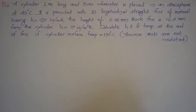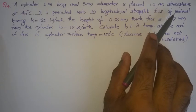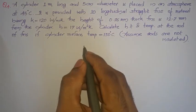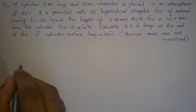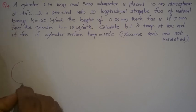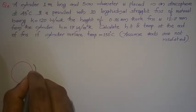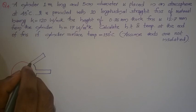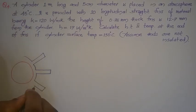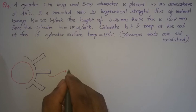The next question is a Case 3 problem: a cylinder 1 meter long and 5 cm diameter is placed in an atmosphere of 45°C. It is provided with 10 longitudinal fins with k = 120 W/m·K. Fin thickness and height are given. Around the entire surface of the cylinder, 10 fins are arranged. Between adjacent fins there is exposed cylinder surface known as the unfinned area.